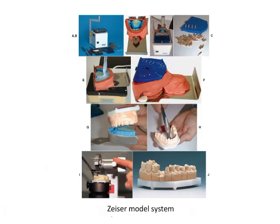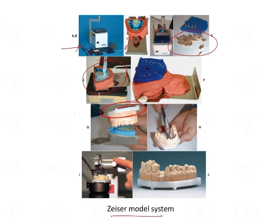The last option is the Zsir model system, which also has a device similar to the Pindex unit. Here the alginate or elastomer impression is first boxed with a silicon putty. Then you place the die pins and pour the impression. The base is not poured but is a ready-made plastic base. Finally, you section the die on a die cutter to obtain the final die. This is the Zsir model system.